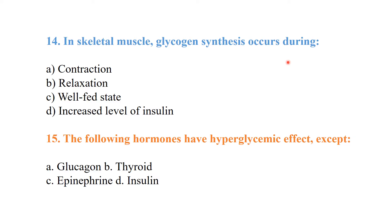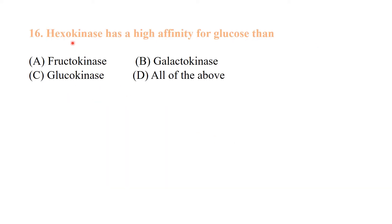The following hormones have a hyperglycemic effect except insulin — insulin has the hypoglycemic effect. Hexokinase has a higher affinity for glucose than glucokinase.